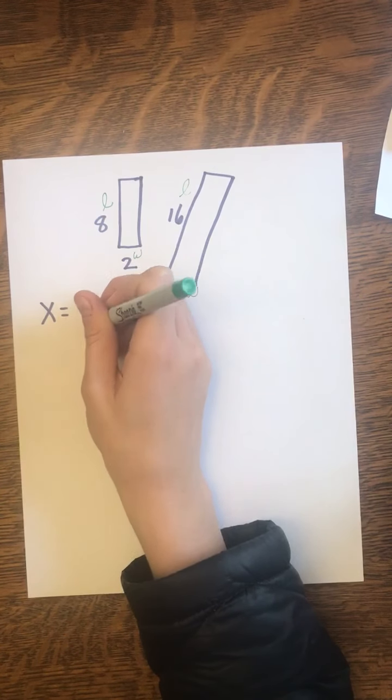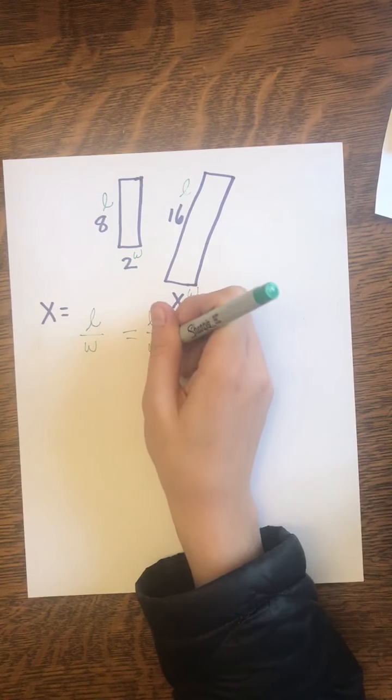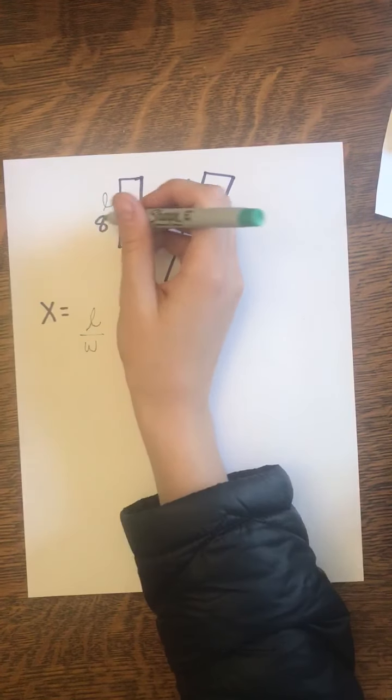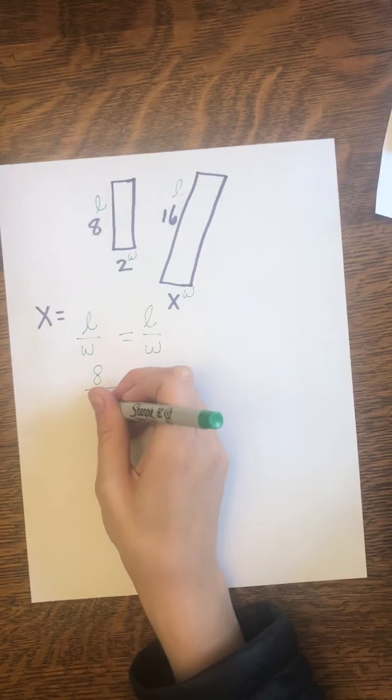Whenever I am told a rectangle or any figure is similar, that means the sides are proportional. So I can set up a proportion to find out what X is. So I'm going to do length over width of the smaller rectangle equals length over width of the larger rectangle. And now I can plug in my values.